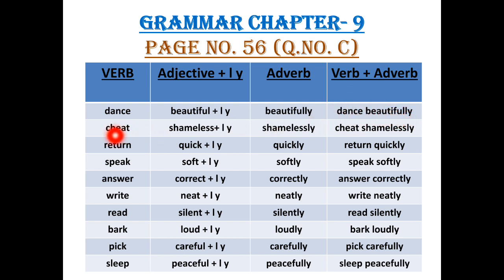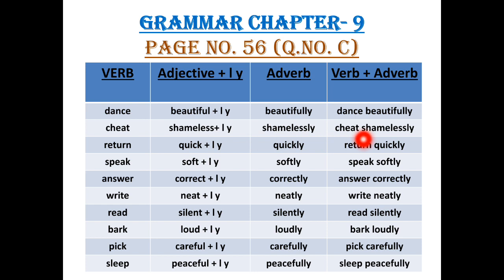The next one is cheat, which is a verb. In the second column, shameless, which is an adjective. And when we will add L-Y to the word shameless, it will become shamelessly, which is an adverb. In the fourth column, when we add verb with adverb, it will become cheat shamelessly.